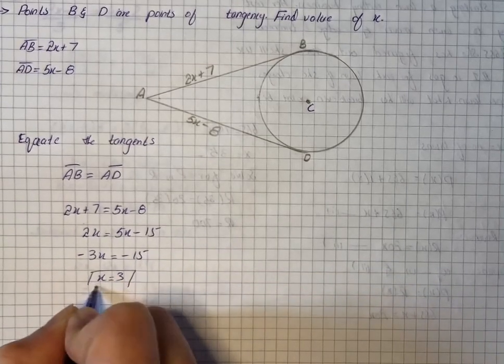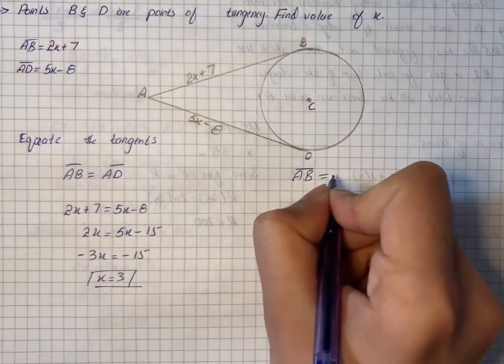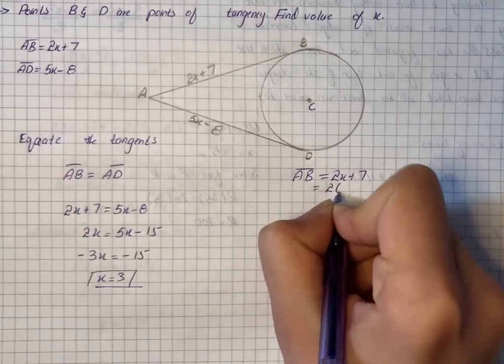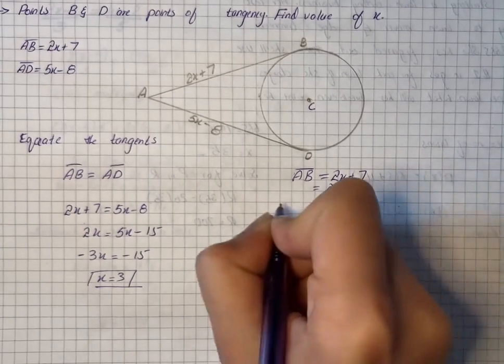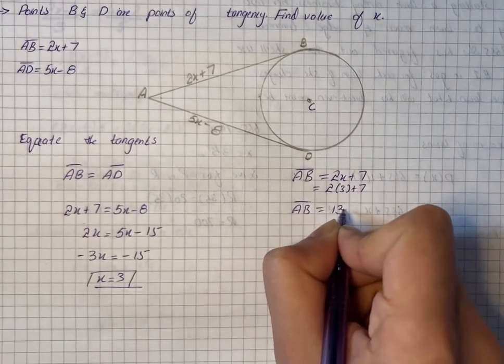Here we have our value for X. If we want to find AB as exact, we have 2x plus 7, so 2 into 3 plus 7. AB is equal to 6 plus 7, that is 13.